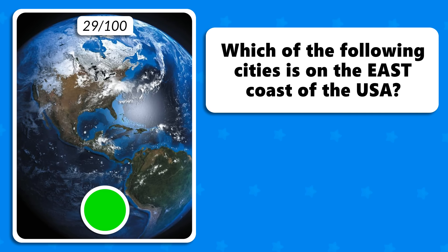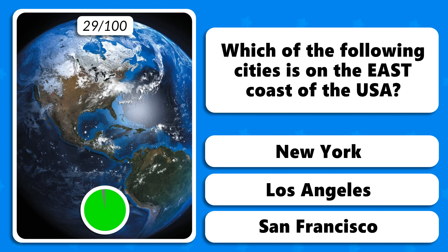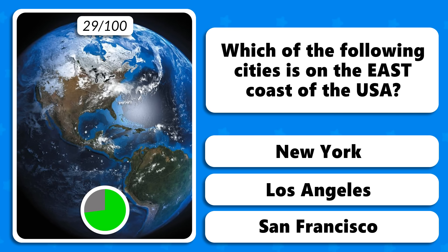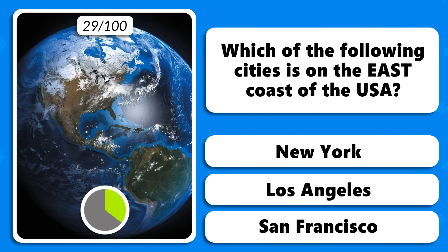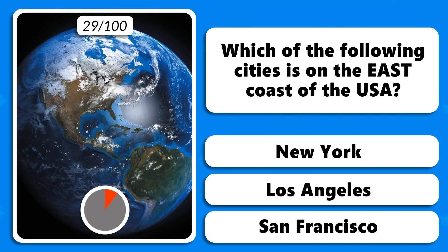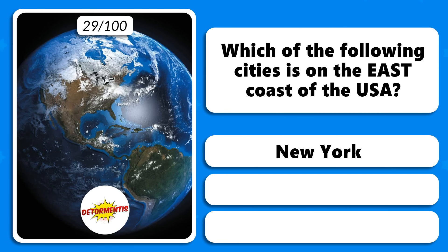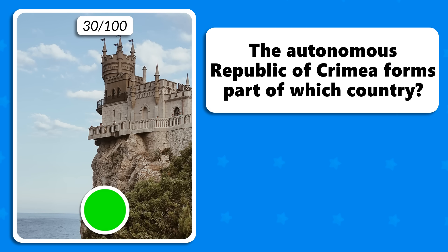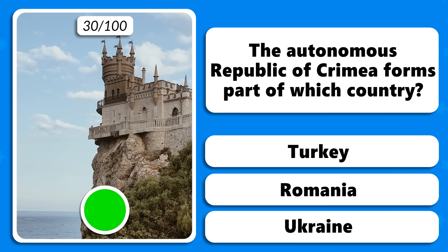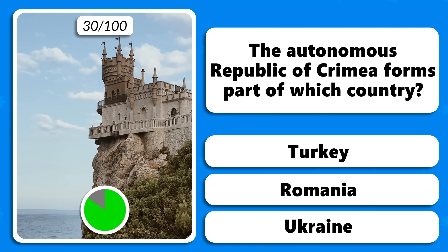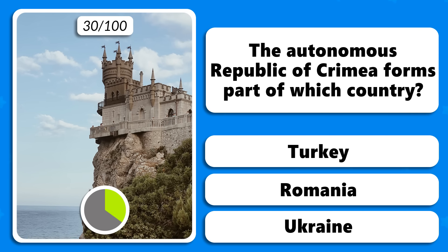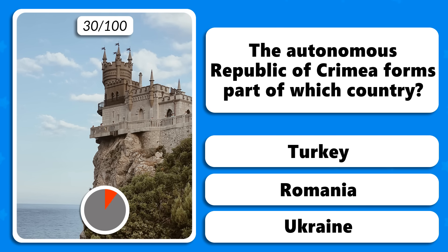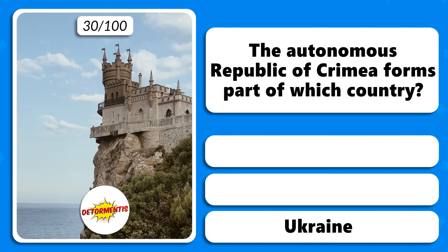Which of the following cities is on the east coast of the USA — New York, Los Angeles or San Francisco? New York. The Autonomous Republic of Crimea forms part of which country — Turkey, Romania or Ukraine? The right answer is Ukraine.